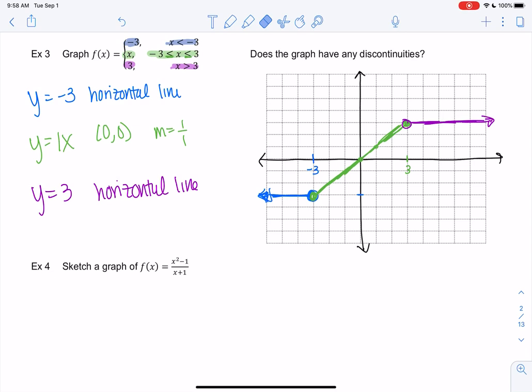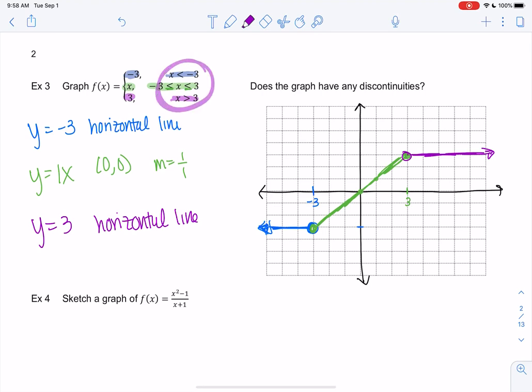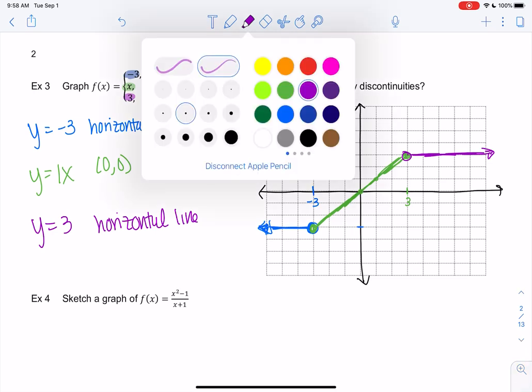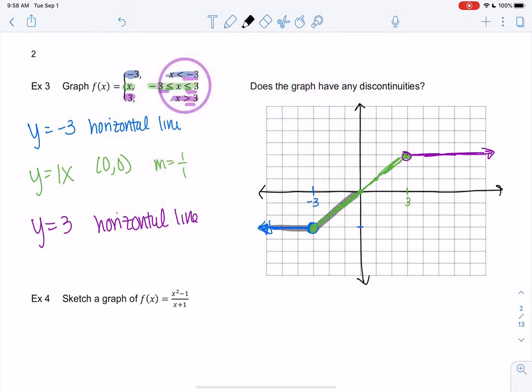That's our weird piecewise function. It actually isn't discontinuous at the negative 3 and 3. It might be discontinuous at these points where it switches, but since they meet at the same point, it's not discontinuous. We could technically draw this without picking up our pencil.